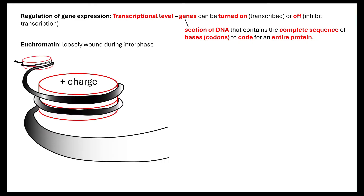We have euchromatin, which is our loosely wound DNA during interphase. It's important to note that when it is loosely wound during interphase, this is the point where protein synthesis can occur, because it is not tightly wound.